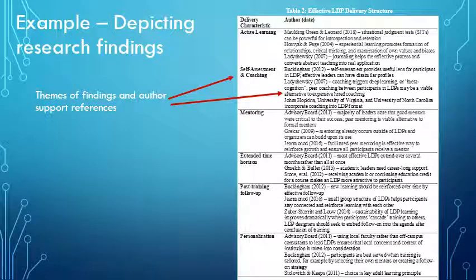Here's an example from my paper — I did a thematic analysis and came up with six themes of an effective leadership development program and the delivery characteristics of those programs. I reported the themes and then included author references that supported each of those themes. This was used to supplement what I wrote about in my findings.